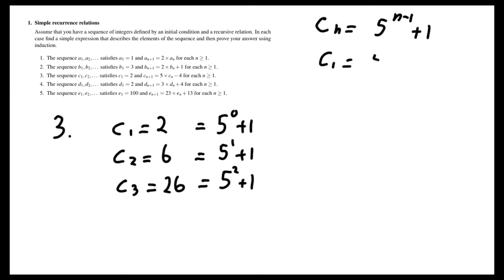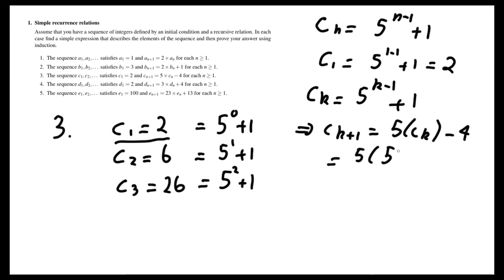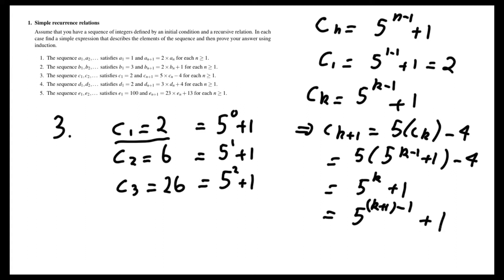For the base case, c1 would then be 5 to the 1 minus 1 plus 1, which is 5 to the 0 plus 1, which is equal to 2 — and that works. Assuming that cₖ is equal to 5 to the k minus 1 plus 1, that implies cₖ₊₁ is equal to 5 times cₖ minus 4, which is equal to 5 times (5 to the k minus 1 plus 1) minus 4, which is equal to 5 to the k plus 5 minus 4, which is 5 to the k plus 1. We can rewrite this as 5 to the k plus 1 minus 1 plus 1, so that matches the form and proves the formula by induction.